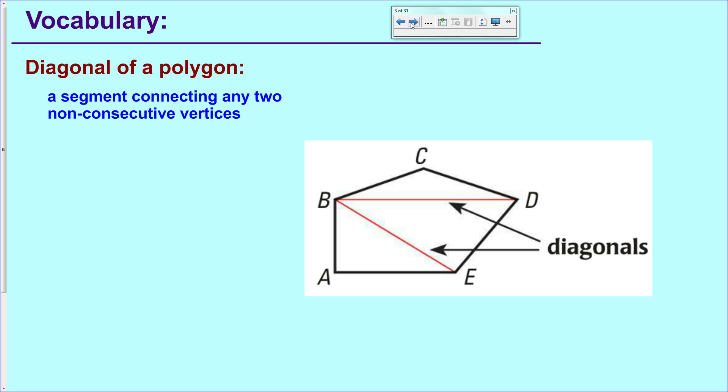The next vocab word is probably not new to you, but here's the official definition. The diagonal of a polygon is a segment that connects any two non-consecutive vertices of a shape. They have to be non-consecutive because they want to span over the interior of the shape a little bit. So, for instance, I could not connect B to C or B to A. That would not be a diagonal. It would just be the side of the polygon instead.